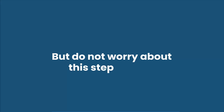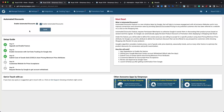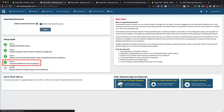Do not worry about this step. As soon as you enable the feature from our app, it automatically inserts a JavaScript code into your website. Furthermore, while this functionality is in beta mode, it will raise a support ticket for us to verify and test if it is working properly. We will also make any necessary changes to your store's theme if needed to accept and display Google-provided product prices, and will mark Step 4 as completed once verification is done.